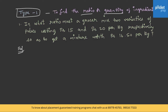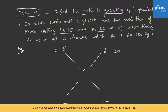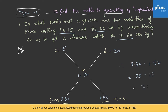Let's solve the Type 1 example using the rule of allegation. Rs. 15 is the cheaper price, Rs. 20 is the dearer price, and the mean price is Rs. 16.50. We calculate D minus M and M minus C. On subtracting, we get 3.50 and 1.50. Therefore, the required ratio is 3.50:1.50, that is 35:15, and the ratio obtained is 7:3.